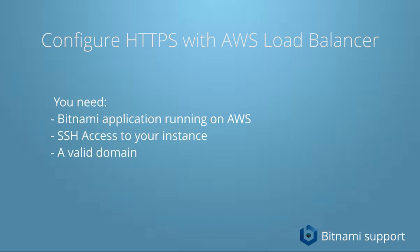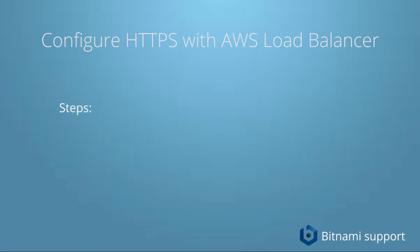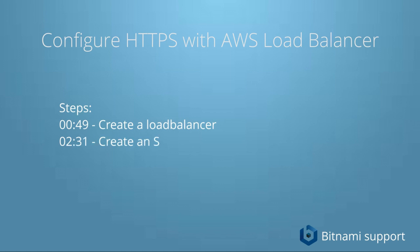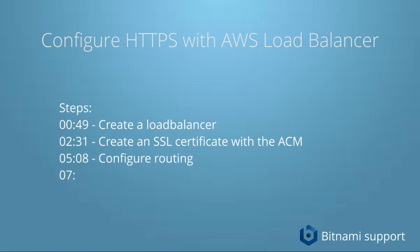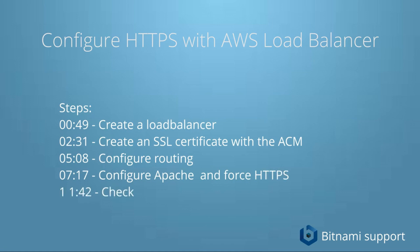These are the steps we will follow. We are going to create a load balancer in the AWS console, then create an SSL certificate using the AWS Certificate Manager, then configure the routing, then configure Apache to use an SSL reverse proxy, and finally check if it's working. So let's start.